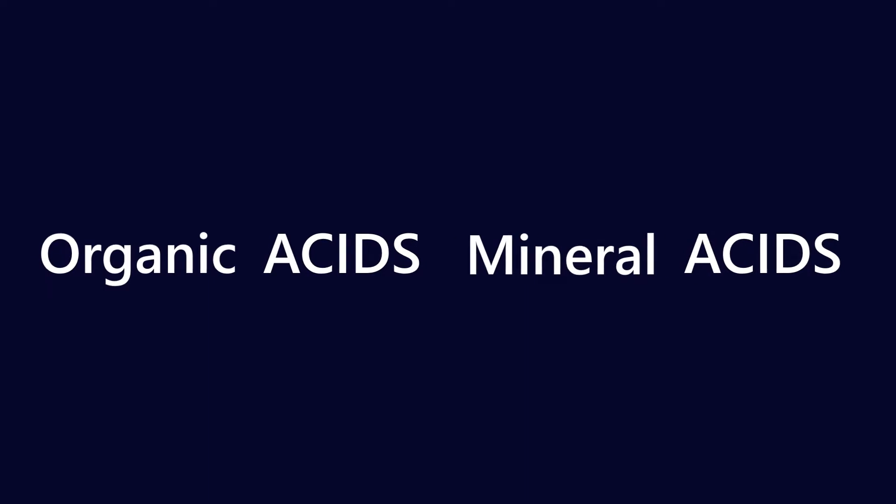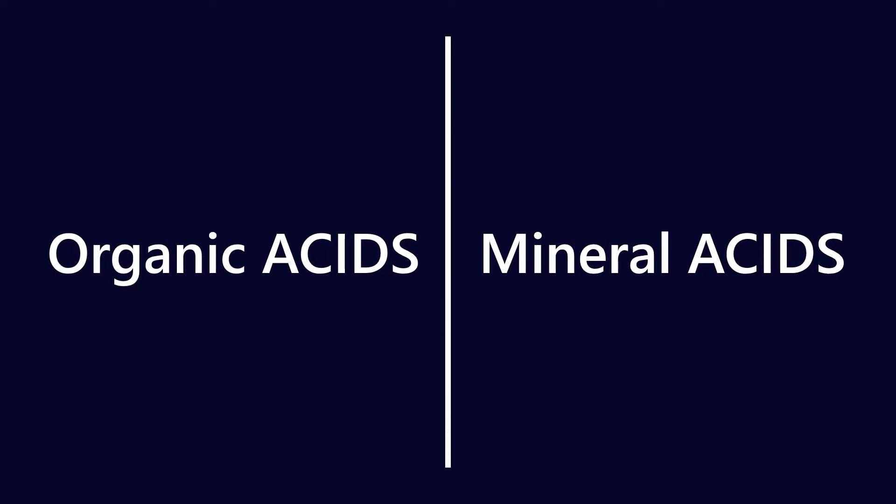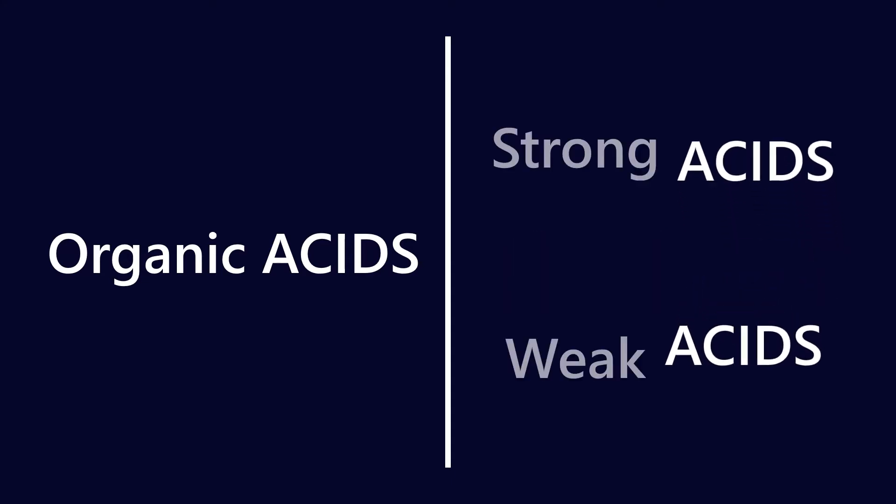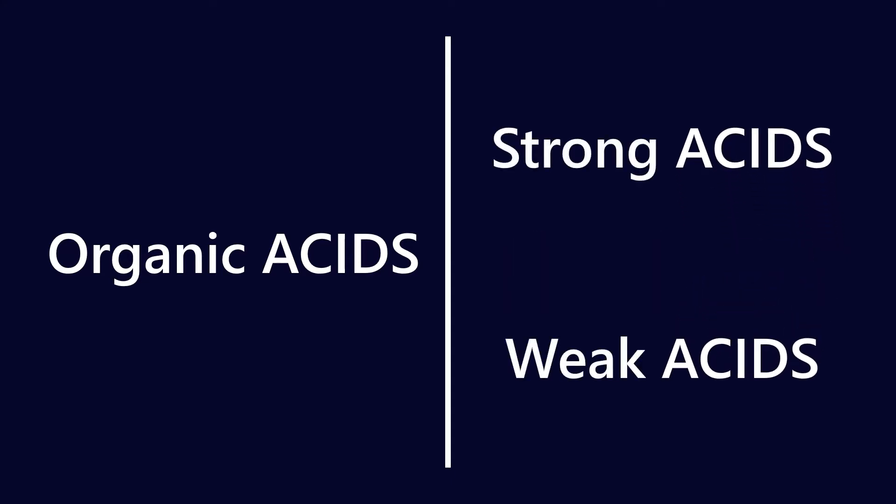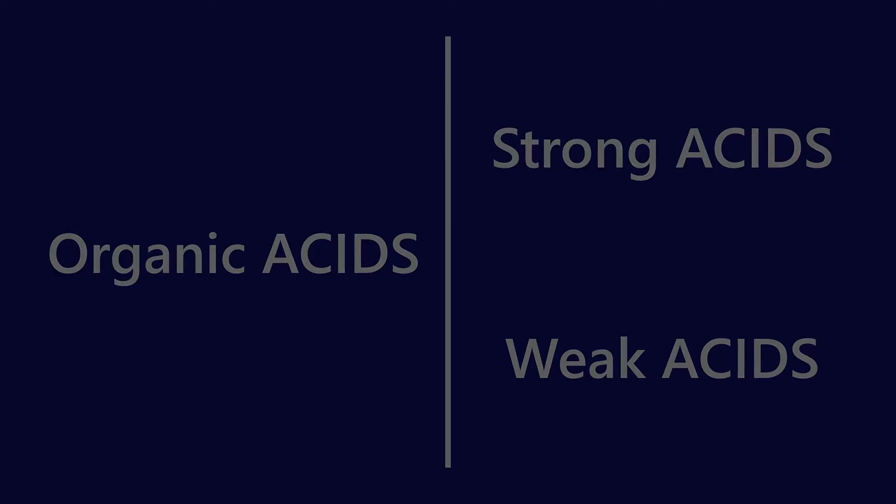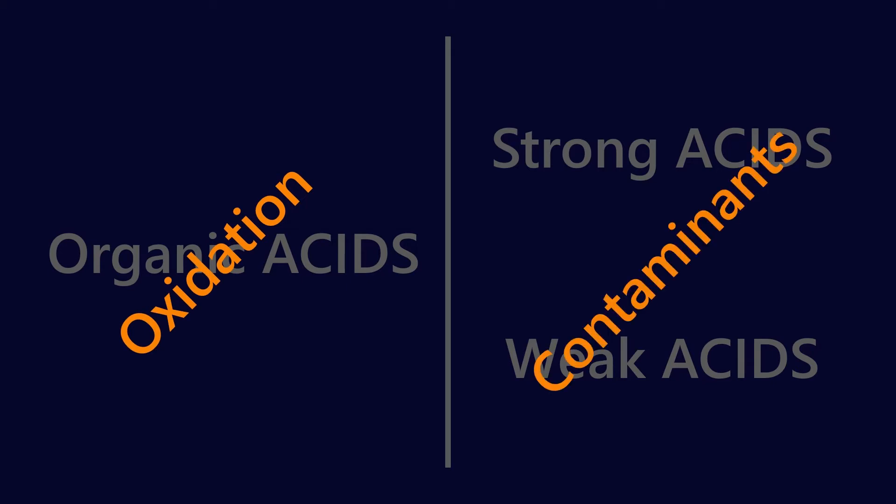So acids can broadly be broken up into two different groups. You've got organic acids and mineral acids, and among the mineral acids you've got both strong and weak acids. Now in the lubricants world we can think of these as coming from effectively two different places. So organic acids are byproducts of the oxidation process of base oils, and strong and weak mineral acids come from contaminants. So that's the framework that we want to be thinking about when we think about acids in lubricants.